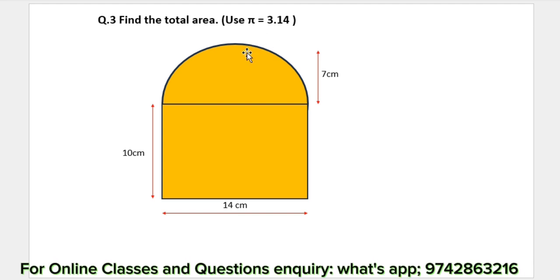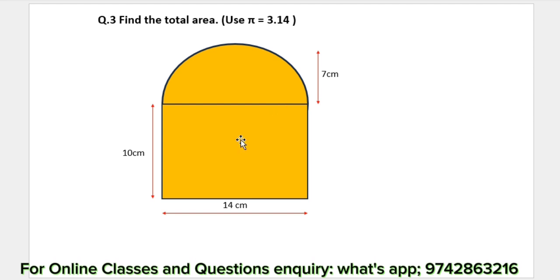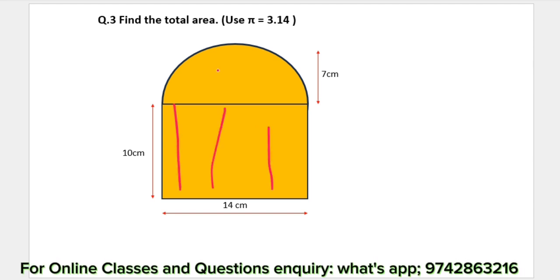Question number 3 is about the square. Now, if you look at the square — this square is about the square.